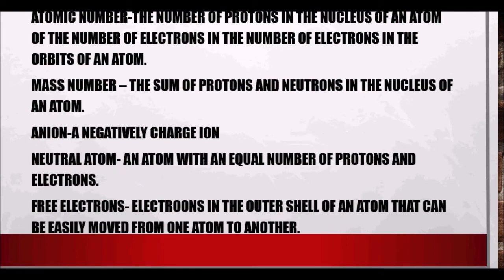The atomic number is the number of protons in the nucleus of an atom, which is also equal to the number of electrons orbiting the atom. The mass number is the sum of protons and neutrons in the nucleus of an atom.